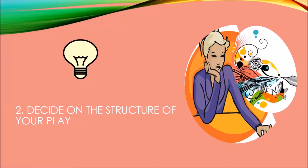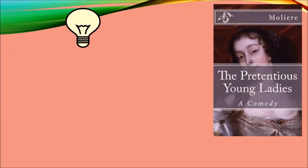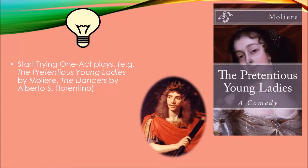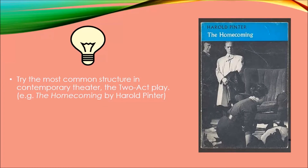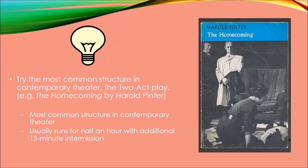The second step is to decide on the structure of your play. Start by trying one-act plays — for example, 'The Pretentious Young Ladies' by Molière or 'The Dancers' by Alberto S. Florentino. A one-act play, though short, still has an exposition, rising action, and resolution, and requires simple sets and costumes. Next, try the most common structure in contemporary theater: the two-act play — for example, 'The Homecoming' by Harold Pinter. It usually runs for half an hour with an additional 15-minute intermission.